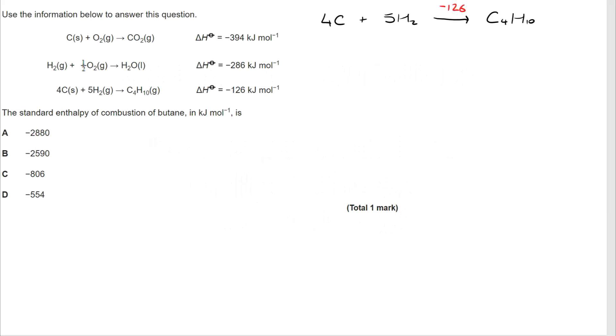Now I have been given 4C plus 5H2 goes to C4H10. So I'm going to use that as a start point for my cycle going along the top. From there I know that if I combust 4C I'm going to get 4CO2. So I'm going to get 4 times negative 394 as my enthalpy change for that. But I'm also going to make 5H2O. So that's 5 times negative 286.